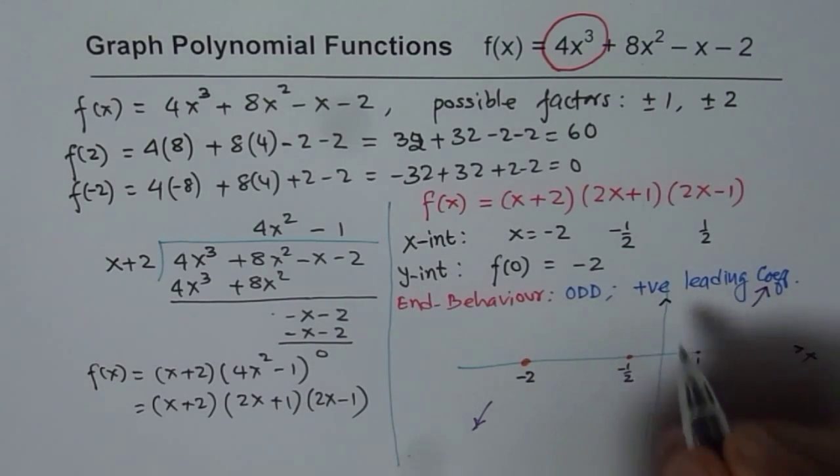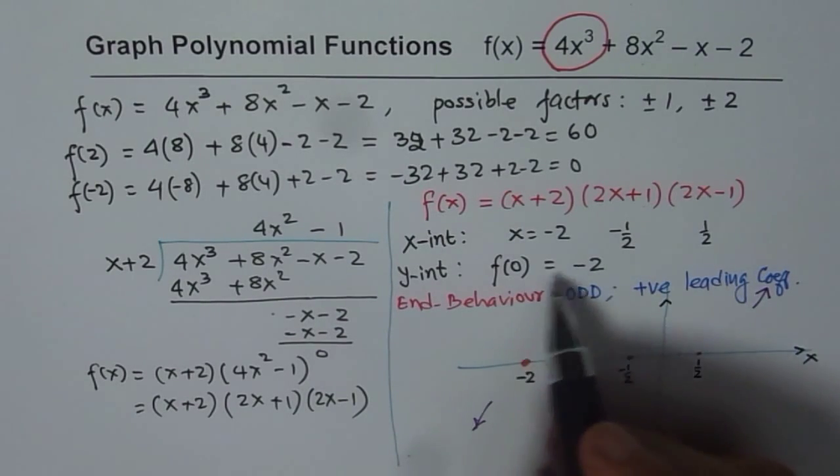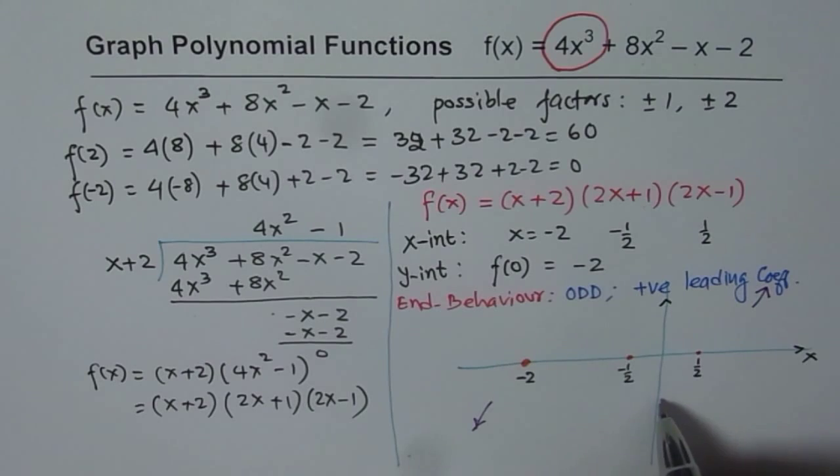So that is x, and this is f of x. And the y-intercept is negative 2. So somewhere here.